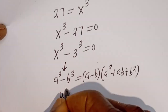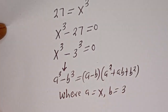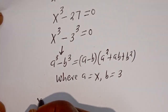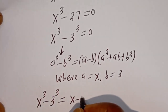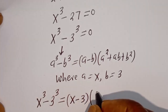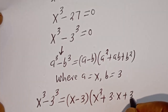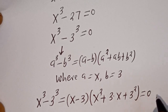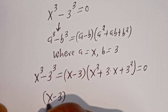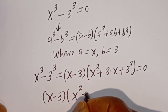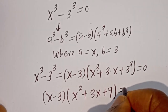Then where a is equal to s and b is equal to 3. From here we have s to the power of 3 minus 3 to the power of 3 is equal to s minus 3, bracket s squared plus 3 multiplied by s, that is 3s, plus 3 squared, which is 9, is equal to 0.